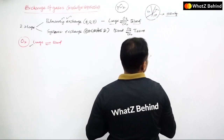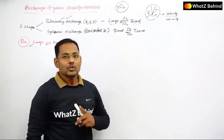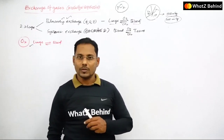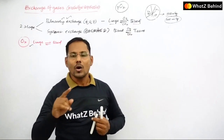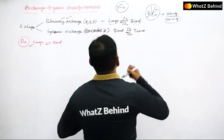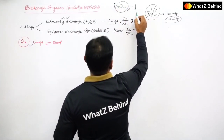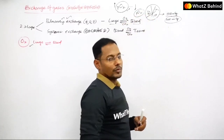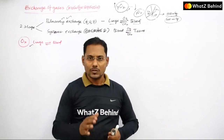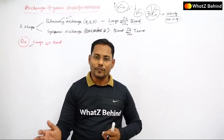For example, oxygen exerts around 200 mmHg pressure — so that 200 mmHg is the partial pressure of oxygen. So whenever the partial pressure is higher, the concentration gradient is higher. According to the diffusion rule, gases move from higher concentration to lower concentration — so through simple diffusion only, these respiratory gases move from one place to another.